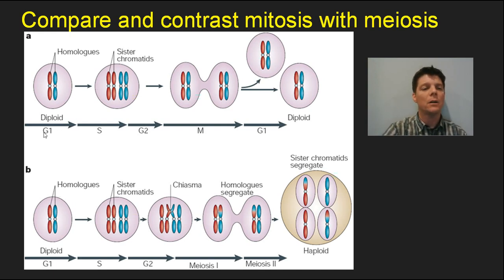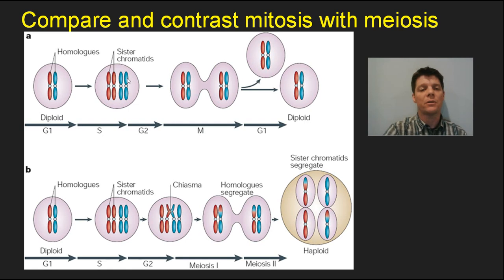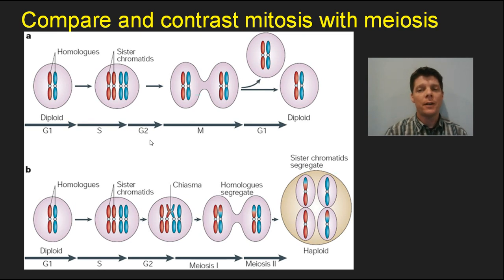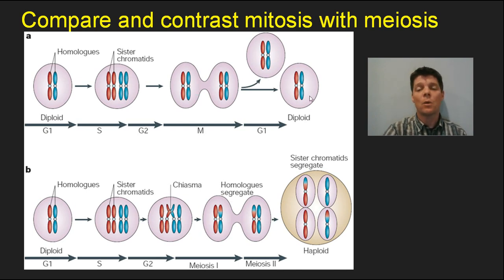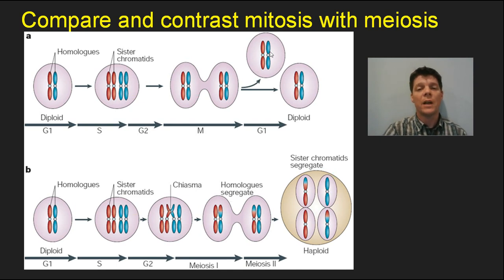During the cell cycle, in G1 cells are growing. During S phase, the DNA and chromosomes are going to be copied, forming sister chromatids. Then during G2 the cells grow a bit more. Finally they reach M — that's mitosis, the process of cell division. The chromosomes are evenly divided, the cell splits in two, producing two cells that are both diploid. Each daughter cell is genetically identical to the original — they are genetic clones.